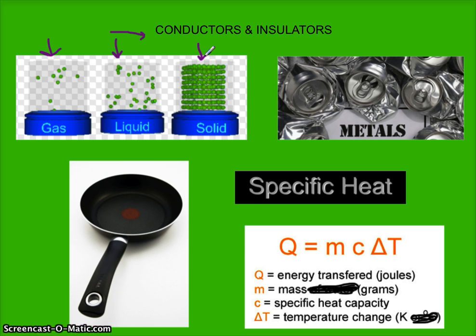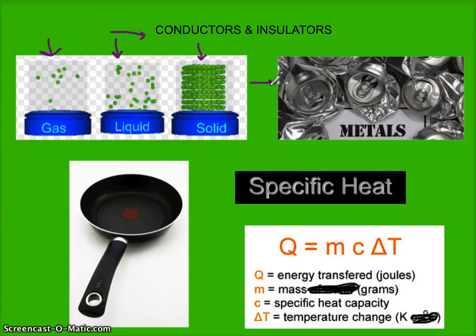Rubber is not a good conductor. Wood is not a good conductor — they're almost as poor as liquids. But the really good conductors are metals. Almost every metal is able to conduct heat and allow conduction. That's what conductors do — they allow the heat transfer that is conduction. Metals are the better conductors.